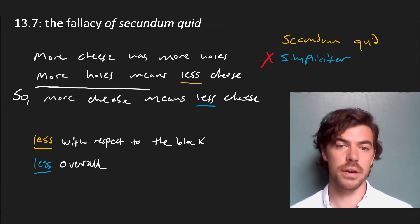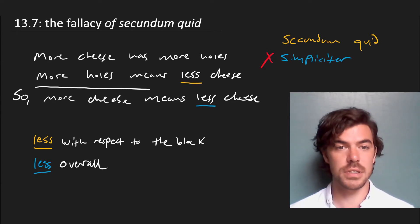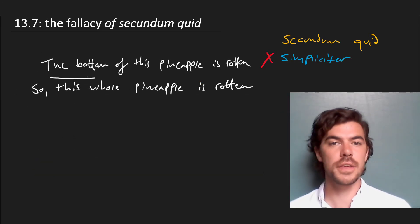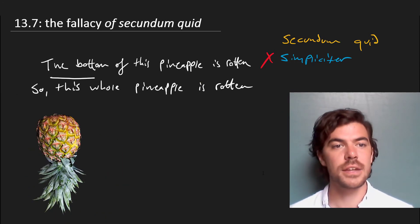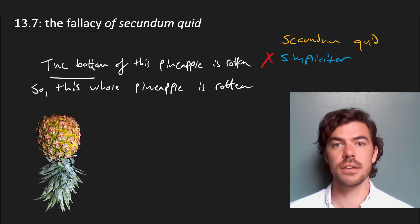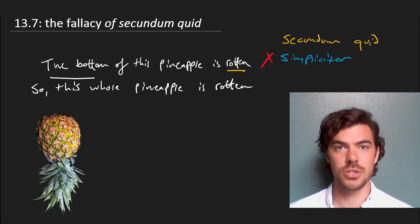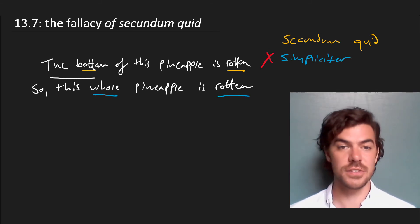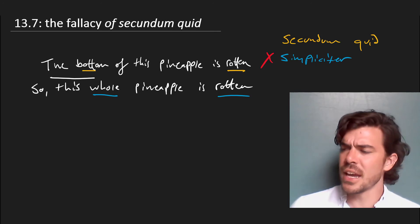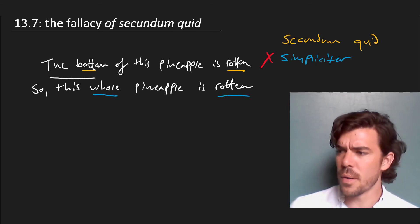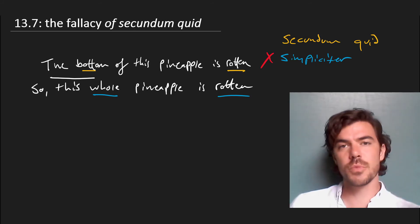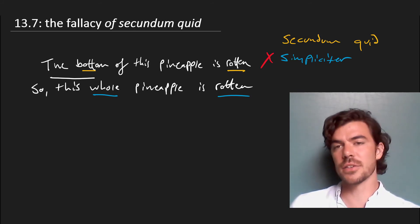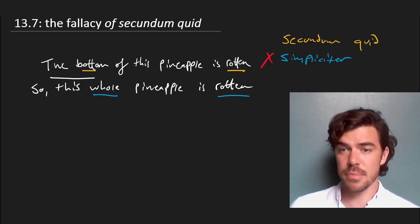I'll give a pretty neutral example where it obviously does work, so we might be tempted to think it's formally valid. Consider the argument: the bottom of this pineapple is rotten, and so this whole pineapple is rotten. Technically, if the bottom is rotten, it's just rotten secundum quid — rotten in a certain respect. But then we say the whole thing is rotten, going from the bottom to the whole. This kind of thinking is accurate because of background notions of things like fungal spores, so in certain cases where contagion or bad influences are concerned, secundum quid thinking actually is correct because of background assumptions about the way things work.